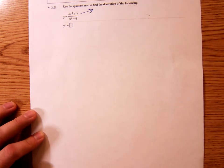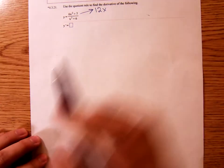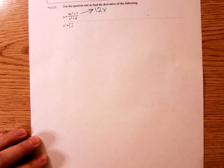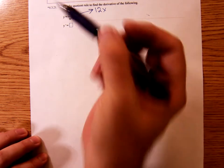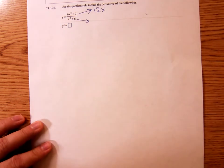It's two times six, so twelve x. And the derivative of the plus seven is zero. Now, the derivative of the denominator - what's the derivative of the denominator? Just two x.